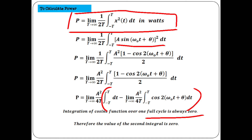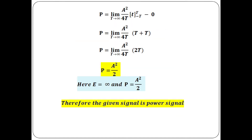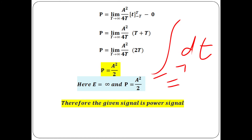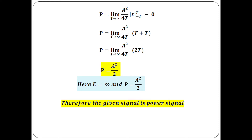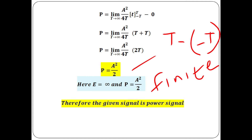The first integral gives limit T→∞ of (A²/4T) × [t from −T to T] = limit T→∞ of (A²/4T) × 2T = A²/2. Since energy is infinity and power is the finite value A²/2, the given signal is a power signal.